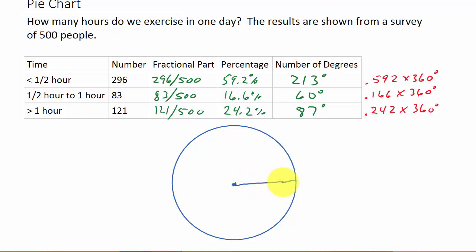So now what we need to do is draw another line rotated 213 degrees. Well, I know if I go from here to here, that's 180, and then if I go to here, that's 270. And we know 225 is right in between them about right here, so 213 would be back this way more. It'd be closer to 180 than 270, so we'll say it's about right in here. And so, that's our 213 degrees, and we could label this. So, this is for less than half an hour, and that is 59.2%.